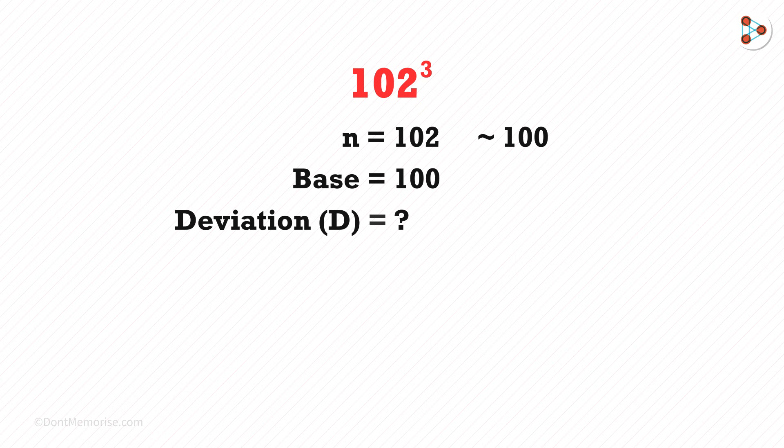What's the deviation here? The deviation of this number from 100 is 2, because 102 minus 100 gives us 2.